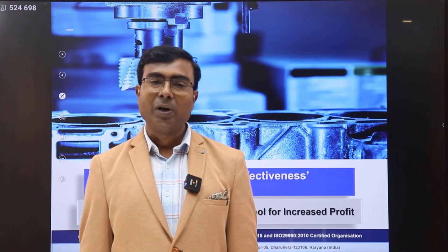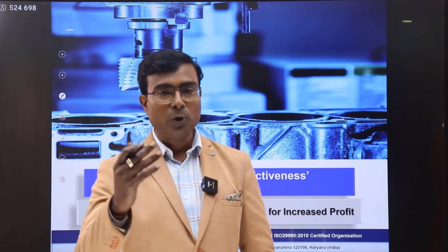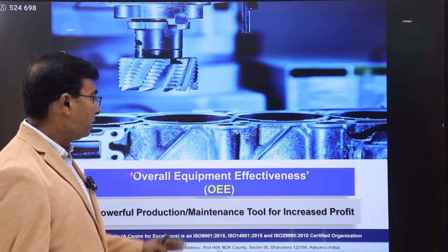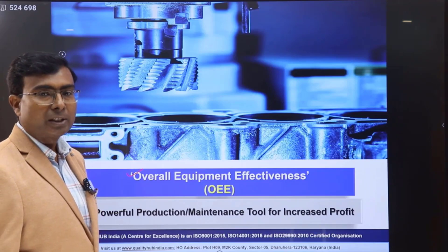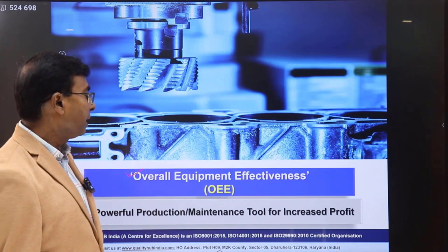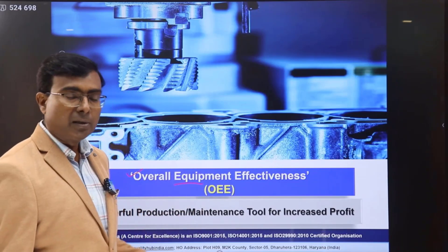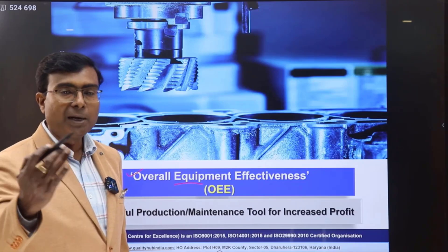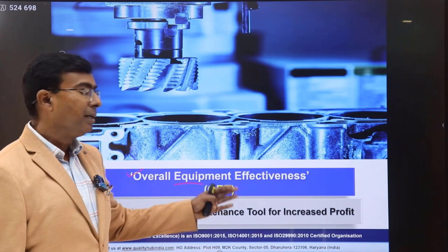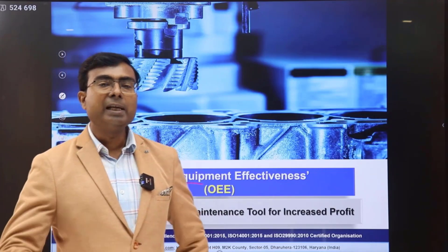Namaskar friends, welcome to the session of Quality of India. I'm Aryan Biswakarma. In this program we are going to explore Overall Equipment Effectiveness, which is a very important performance indicator for any manufacturing organization. When we talk about OEE, it is used by production, maintenance, and finance departments for assessing the performance of the organization, identifying gray areas, and making improvements.